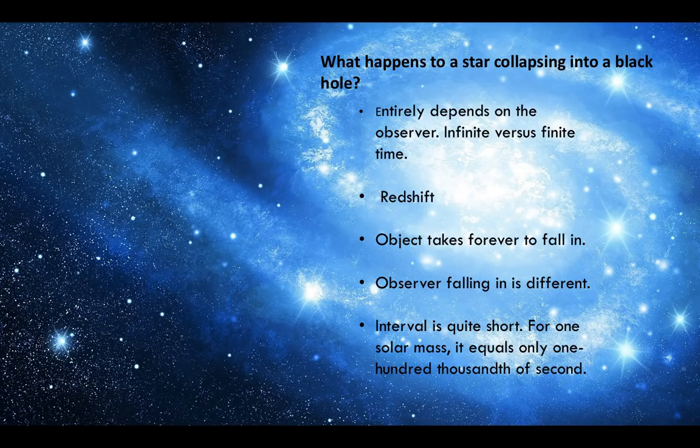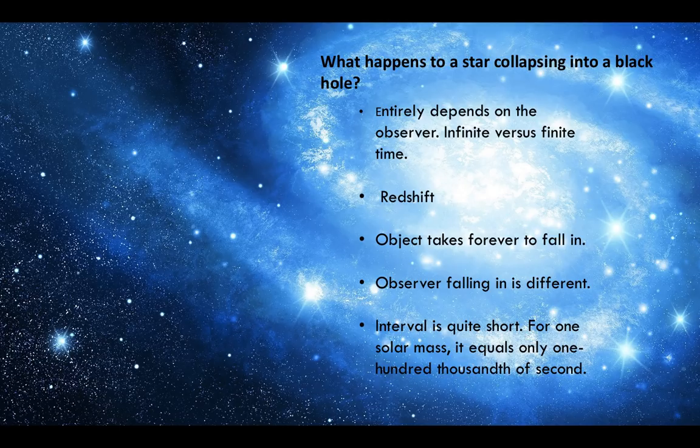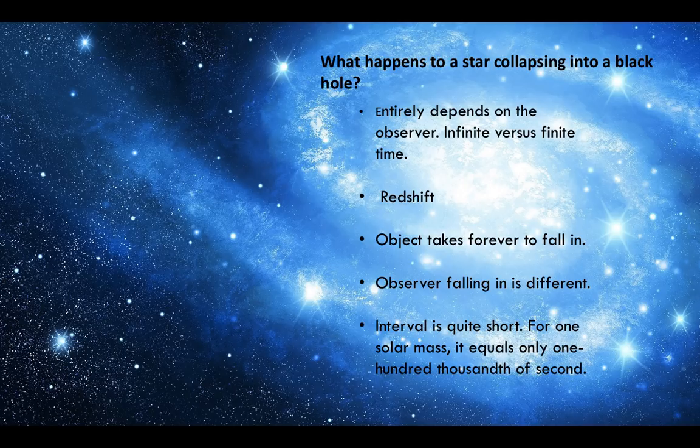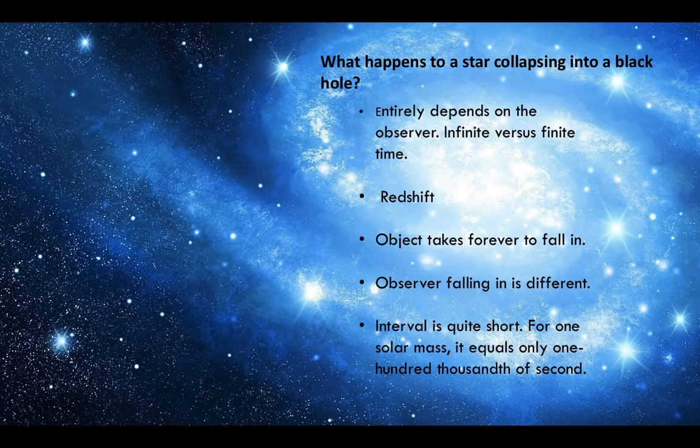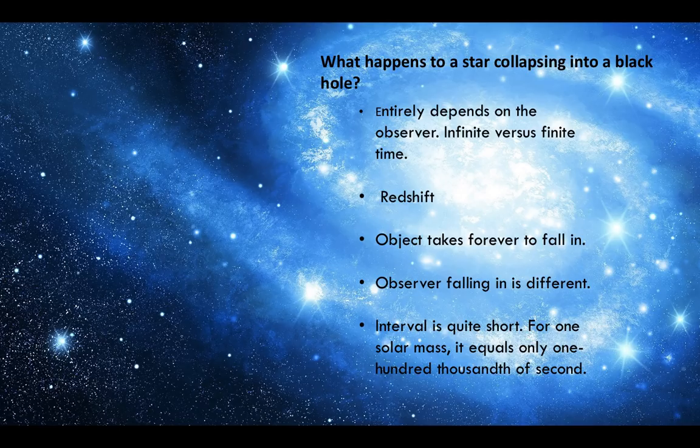As seen from the perspective of the observer, the object might seem to take forever to fall in because of time dilation effects. As far as this external observer is concerned, the points that would mark the place surrounding a black hole where time stops completely would be the Schwarzschild radius. An observer riding on the surface of this collapsing star, however, would see things differently. This observer would pass right through the Schwarzschild radius in quite a short time—for one solar mass, one hundred thousandths of a second.